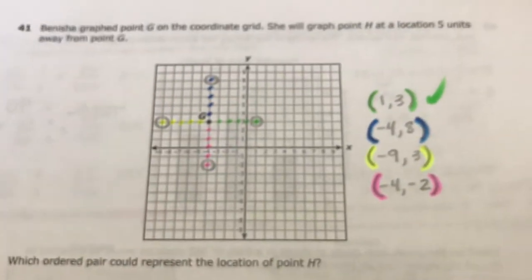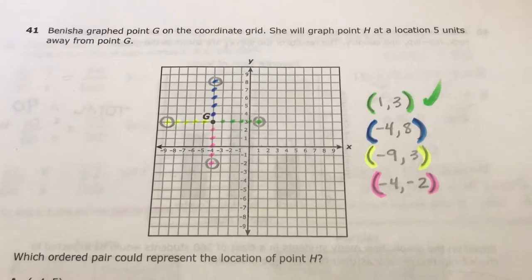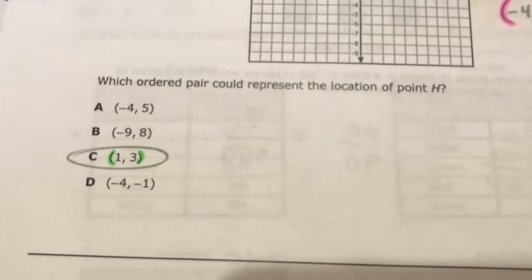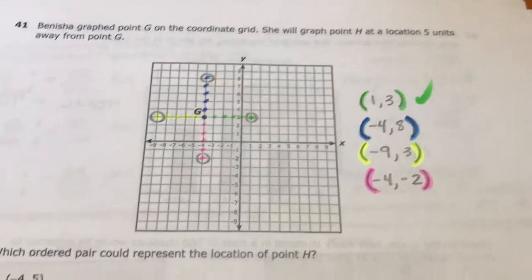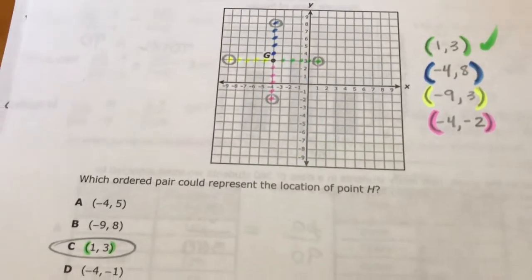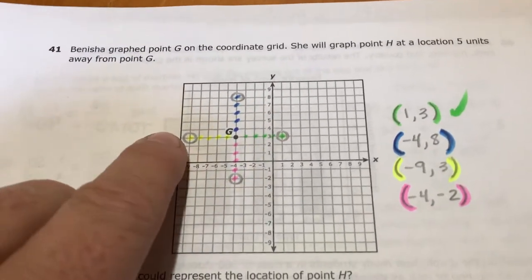The yellow value from the origin is negative 9 all the way to positive 3. And this value from the origin is negative 4 down to negative 2. So I just made a list of the coordinates that go with each possible choice. And it says which one could represent H, and the only one that's correct is (1, 3).